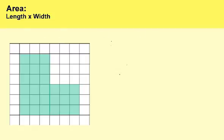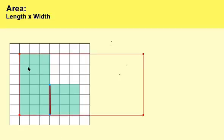Same operation. Remember, in order to find the area of an irregular shape, first you have to break the irregular shape up into regular shapes. So we break up the irregular shape into regular shapes — we split it right there. So we have this portion right here and then this portion right here, and we have to find the area of each and then add them together.